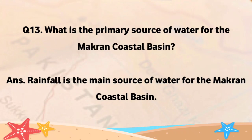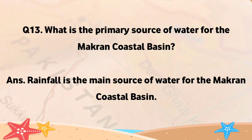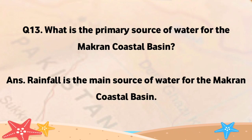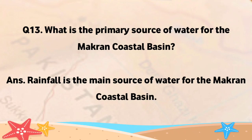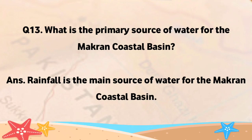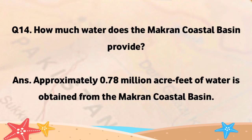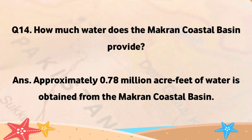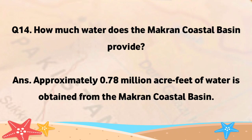What is the primary source of water for the Makron Coastal Basin? Rainfall is the main source of water for the Makron Coastal Basin. Approximately 0.78 million acre feet of water is obtained from the Makron Coastal Basin.